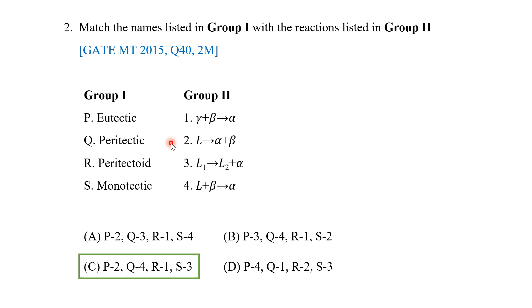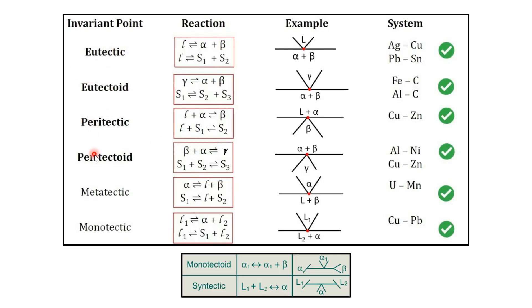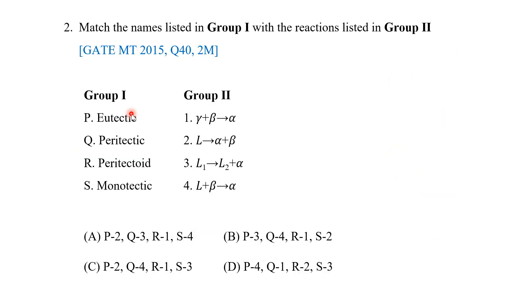That covers invariant reactions and their different types. Please keep in mind these questions are repeated many times, so know what an invariant reaction is, know the Gibbs phase rule, and memorize at least the first four types of invariant reactions along with examples of a few systems. As an activity, the iron-carbon diagram has three invariant reactions — I request that all of you find those three reactions. Going through the iron-carbon phase diagram will also help you answer many other questions.